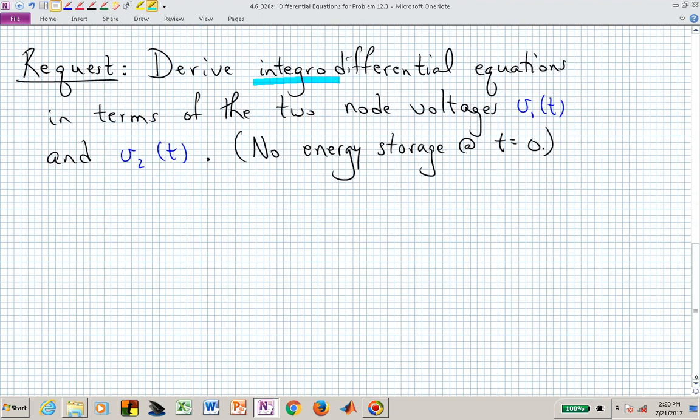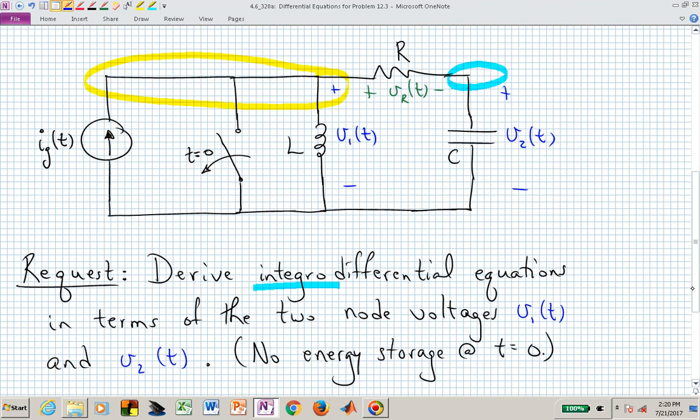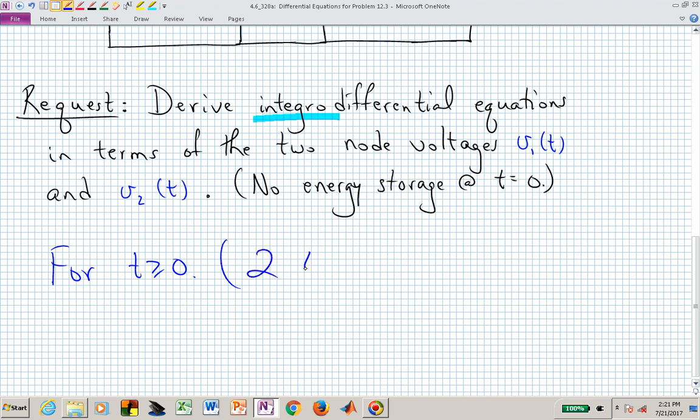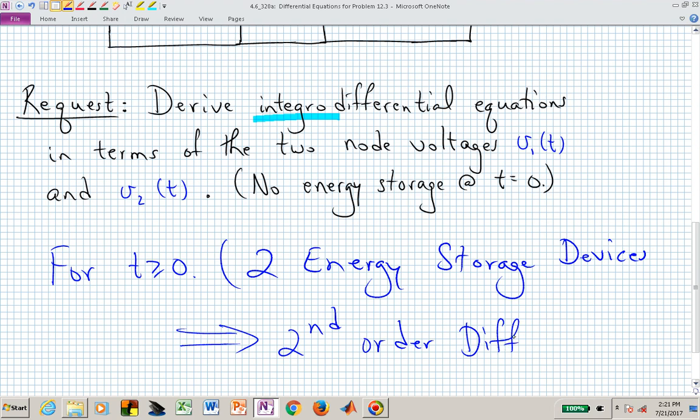Using our strategy up to this point, we can say that for t greater than or equal to 0, we can look at that circuit, and we can see that two energy storage elements are involved or present. And those are in the form of one inductor and one capacitor. That now implies that we should be finding a second order differential equation.